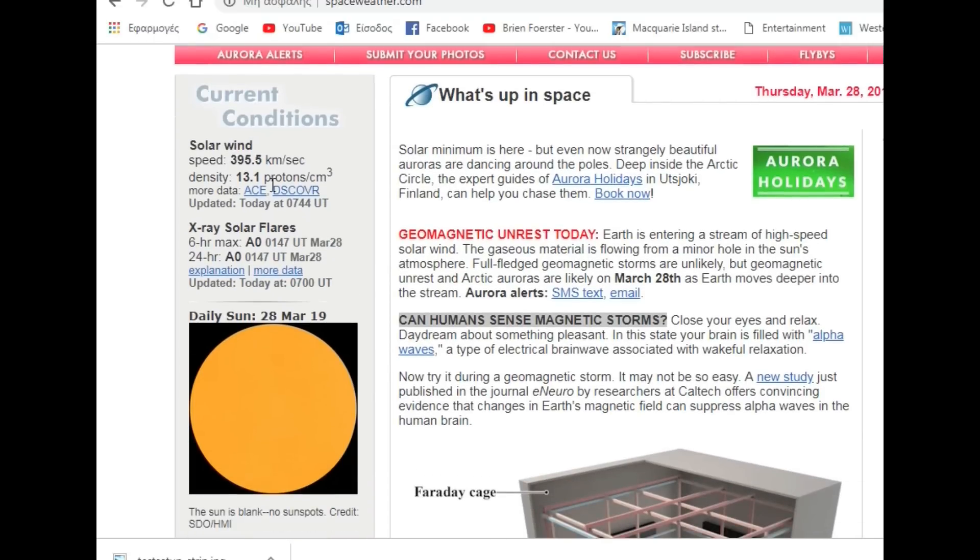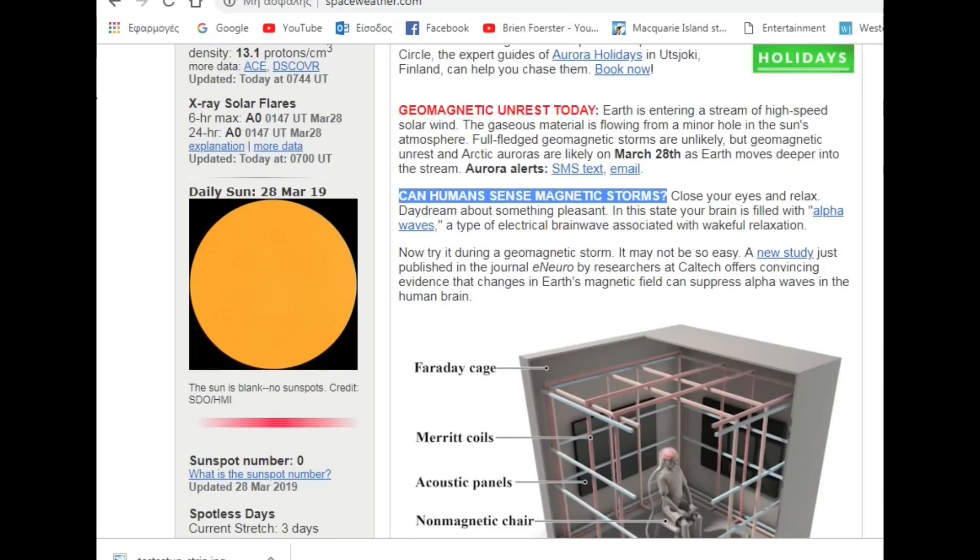Now, the solar wind is at 395.5 kilometers per second. X-ray solar flares, 6-hour max from hole AO0147 as today, and in the next 24 hours, again, AO0147. So now, the geomagnetic unrest today. Earth is entering the stream of high-speed solar wind, gaseous materials flowing from a minor hole in the sun's atmosphere. Full-fledged geomagnetic storms are unlikely, but geomagnetic unrest and Arctic auroras likely today as the Earth moves deeper into the stream.